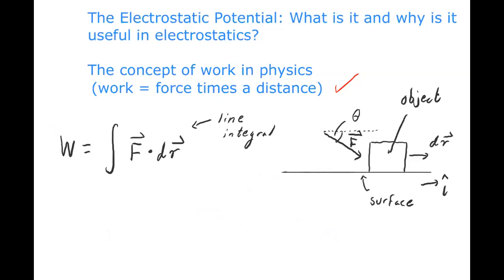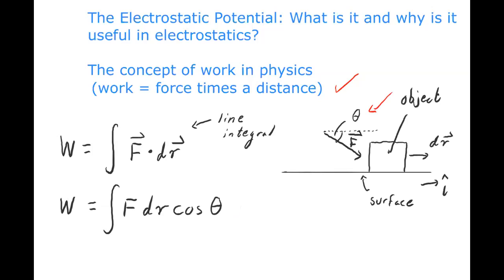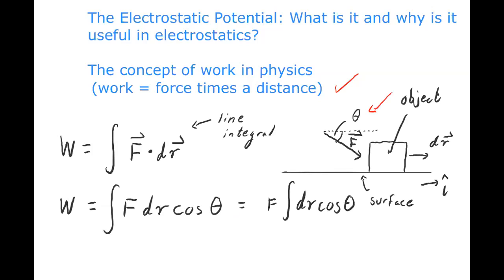The work done on that object is going to be the magnitude of the vector f times displacement (a scalar) times the cosine of angle theta, where theta is defined in the diagram. Assuming the force is constant, I can bring it outside the integral, and with knowledge of theta, I can evaluate the line integral to get a number.